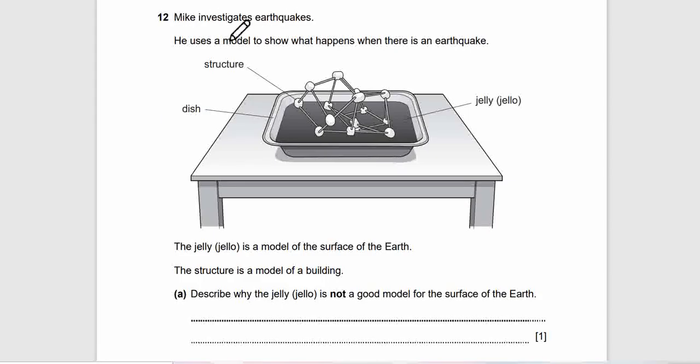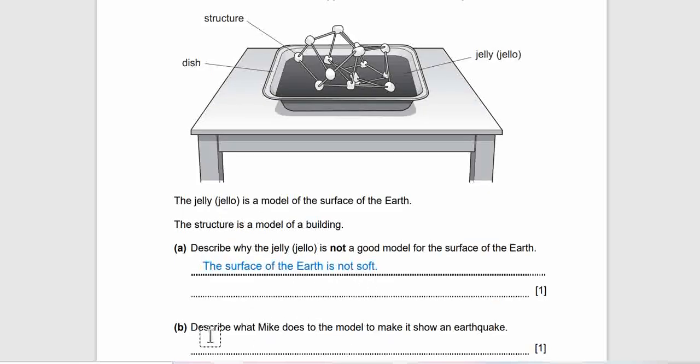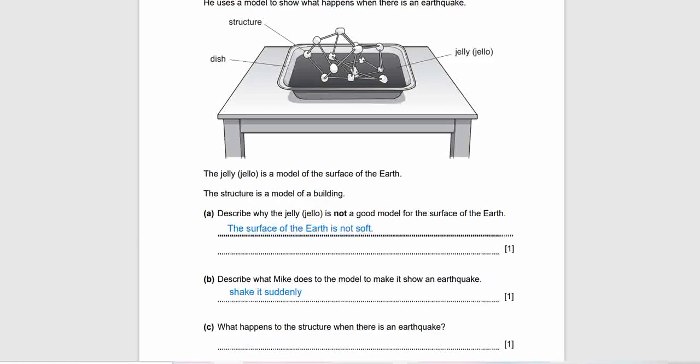Question 12: Mike investigates earthquakes. He uses a model to show what happens when there is an earthquake - a dish and jelly. The jelly is a model of the surface of the earth. The structure is a model of a building. Describe why the jelly is not a good model for the surface of the earth. The answer: The surface of the earth is not soft like jelly. Our earth's crust is rough. Question 12b: Describe what Mike does to the model to make it show an earthquake. The answer: Shake it suddenly to make an earthquake. Question 12c: What happens to the structures when there's an earthquake? Everything falls down, so it falls down definitely.